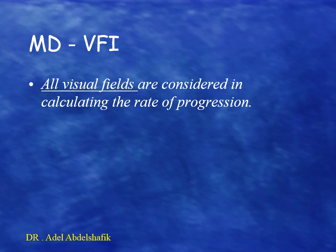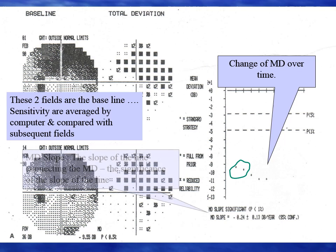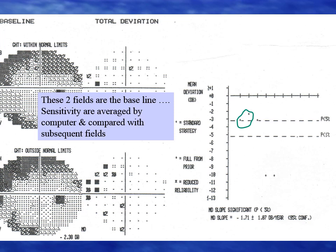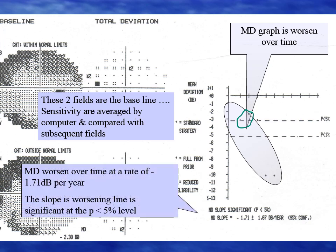In the case of mean deviation and visual field index, all the visual fields are considered for calculating the rate of progression. The mean deviation is recorded over multiple visits — the basal two fields are averaged and compared with follow-up values. The change over time allows you to calculate the slope of the regression line.